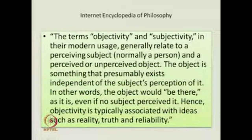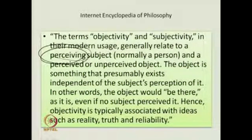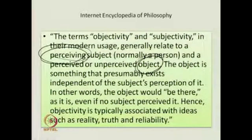From the Encyclopedia of Philosophy: 'The terms objectivity and subjectivity, in their modern usage, generally relate to a perceiving subject — that is, a person — and the perceived or unperceived object.' There is a subject that perceives and an object that you perceive. The object presumably exists independent of the subject's perception of it — the object would be there as it is, even if no subject perceived it.